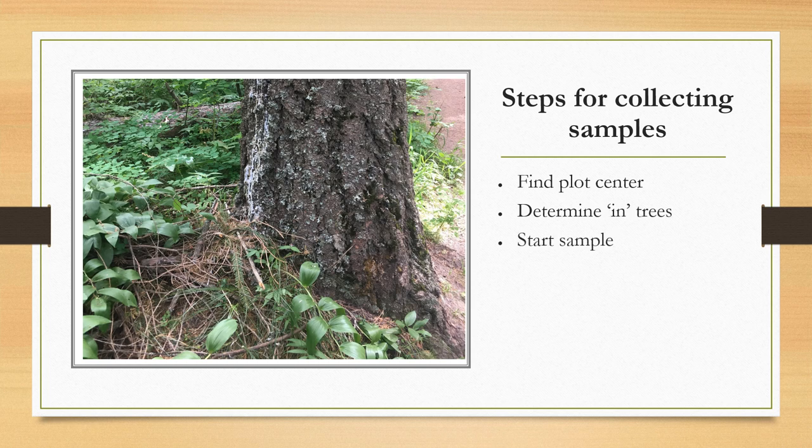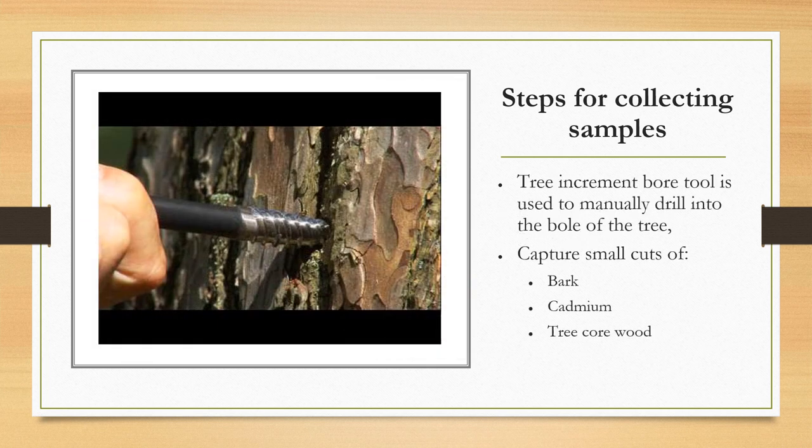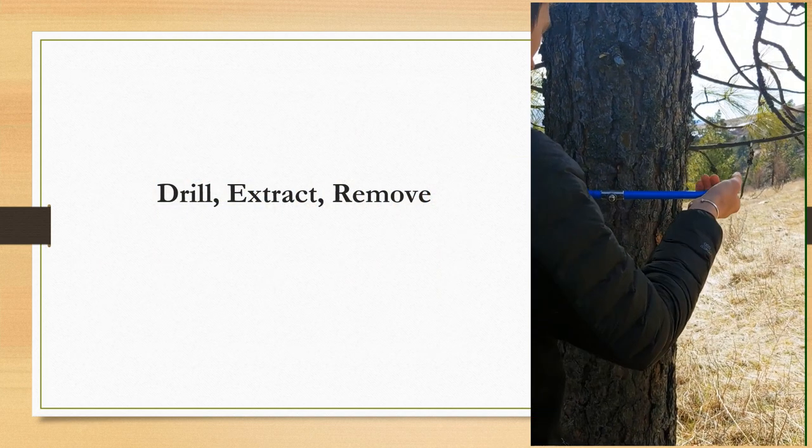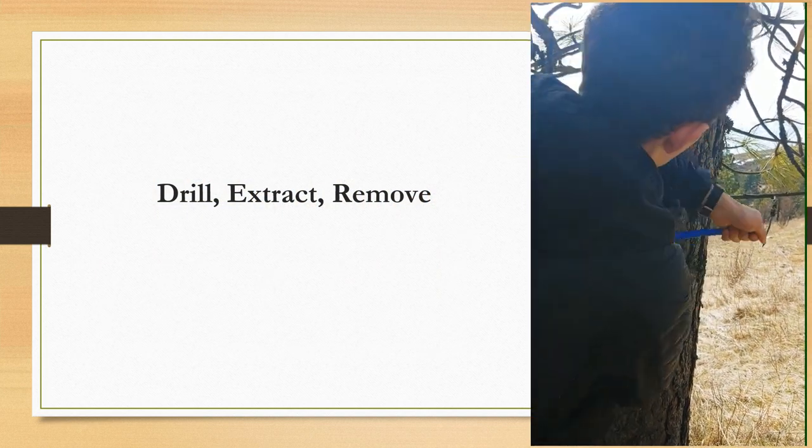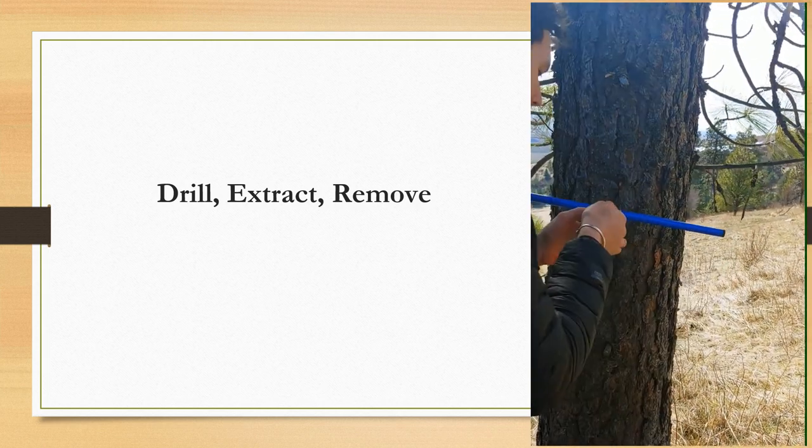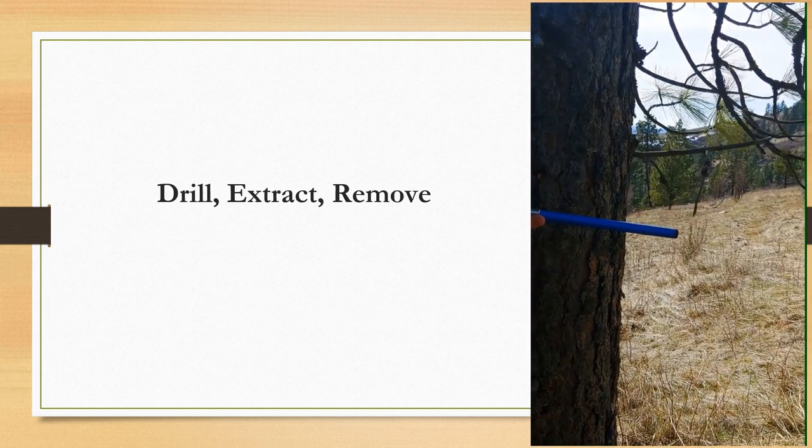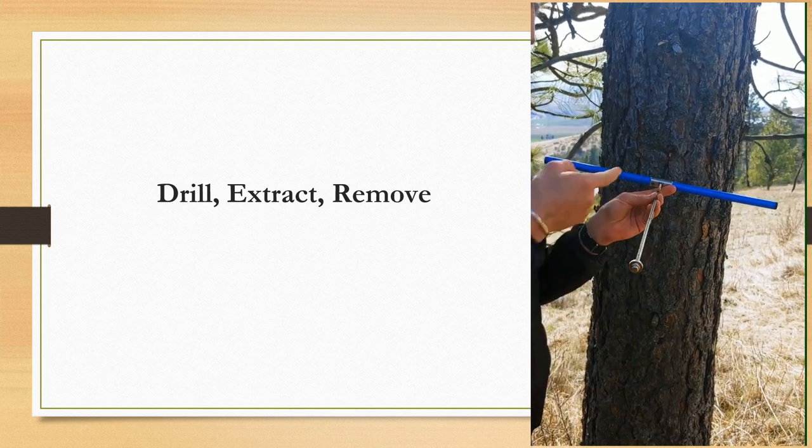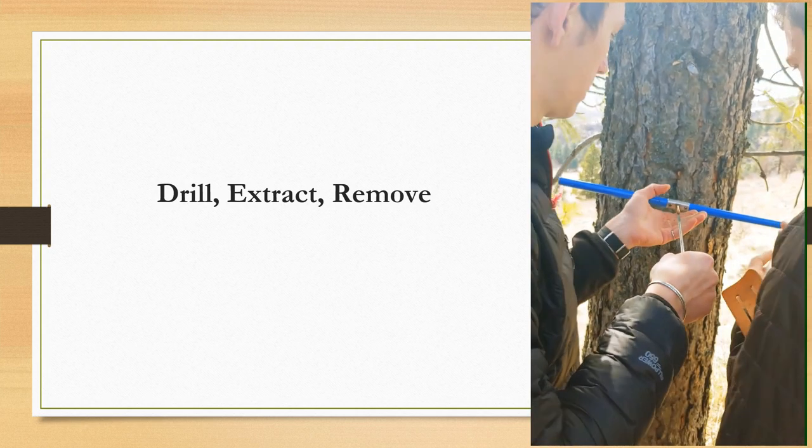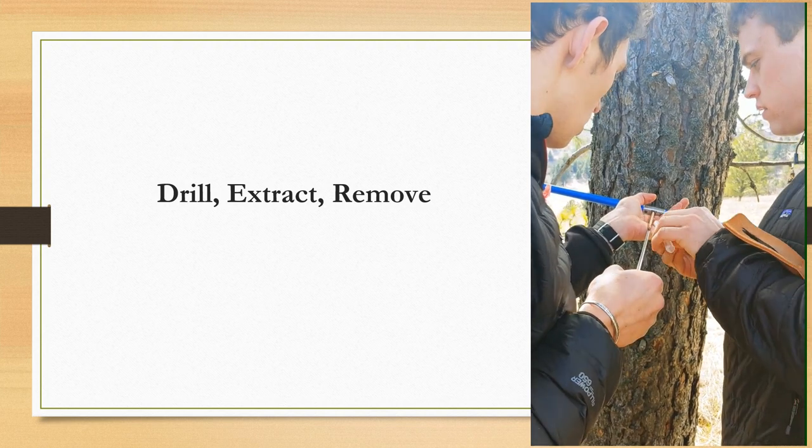This will be the tree you take the core sample from. Then take the increment borer and remove the bill and extractor from the handle. Place the extractor on the side of the tree by sticking the sharp end into the bark and letting it hang there. Attach the bill to the handle and lock it in place. Then measure 4.5 feet for breast height in order to get to where the center of the tree is. Then place the bill into the tree at breast height and start twisting to the right until you are halfway into the tree.